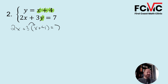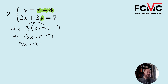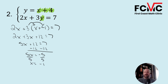Let's solve this. Distributing gives us 2x plus 3x plus 12 equals 7. Combining like terms: 5x plus 12 equals 7. Subtracting 12 from both sides: 5x equals negative 5. Dividing by 5: x equals negative 1.